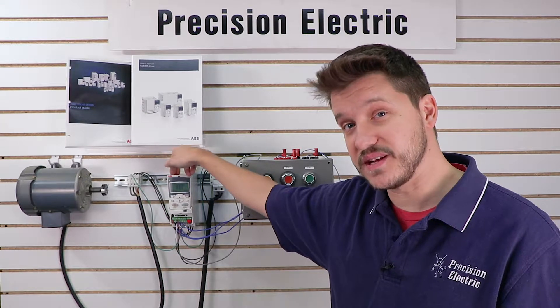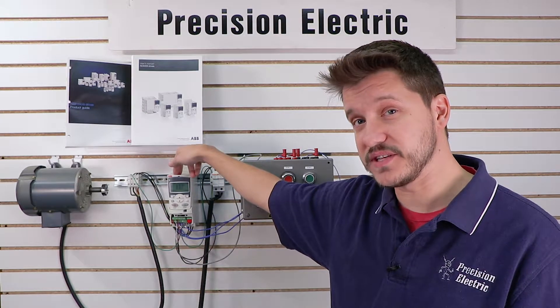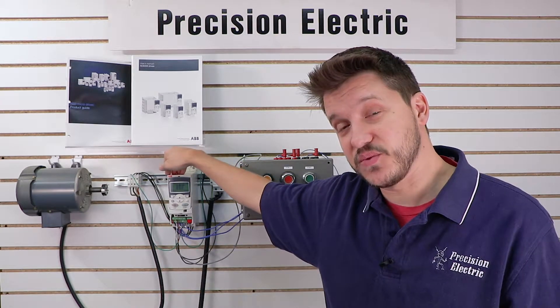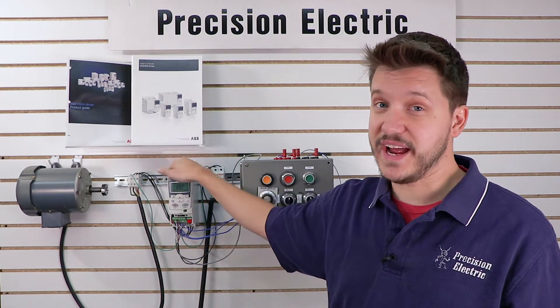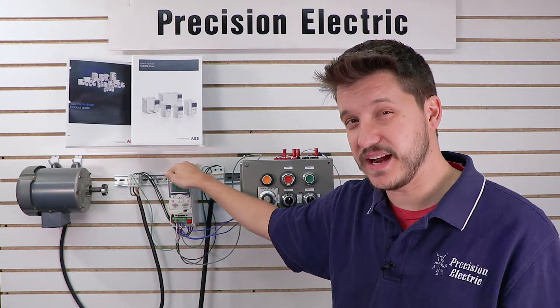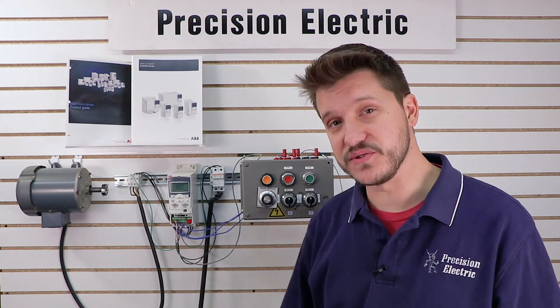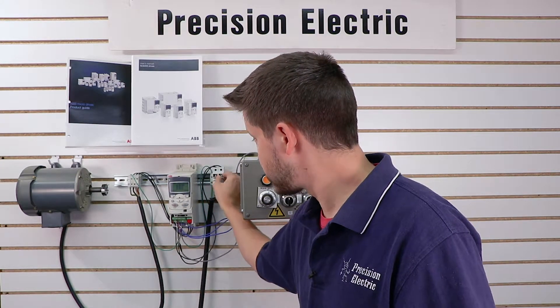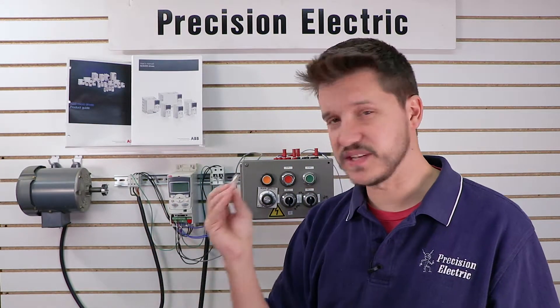The input current is going to be a lot higher on a single phase drive than the output current. So you take that input current, 6.1, you multiply by 1.5, which is roughly around 9 amps, maybe 9.5 amps. And that gives you your fuse sizing. So in this case, I have 10 amp fuses that are set up for my drive.